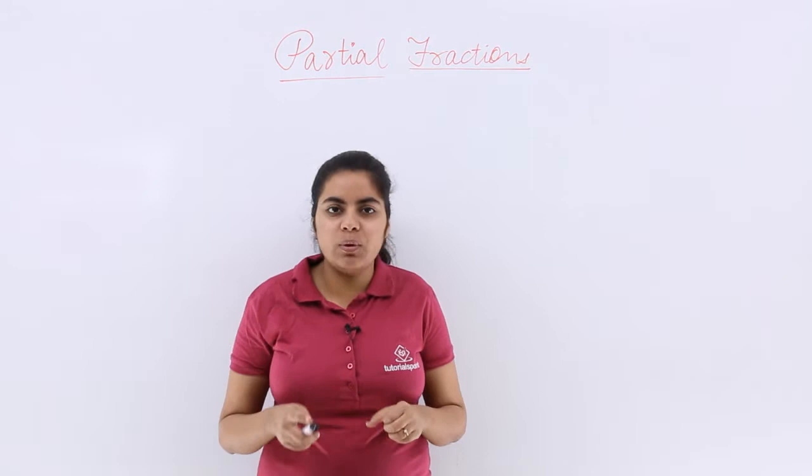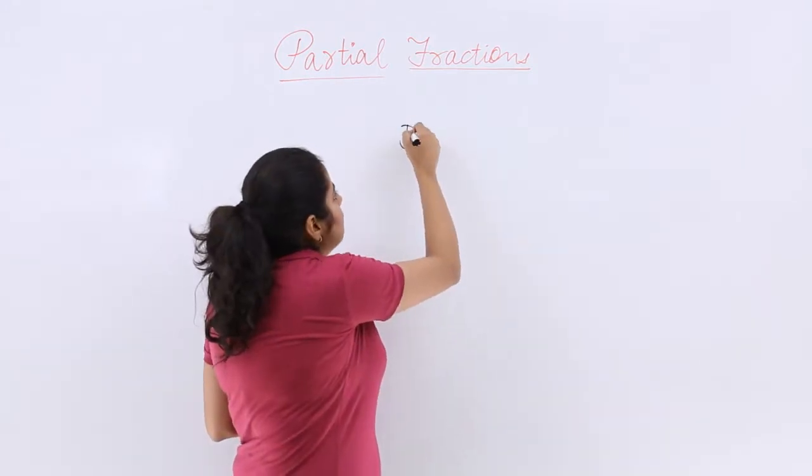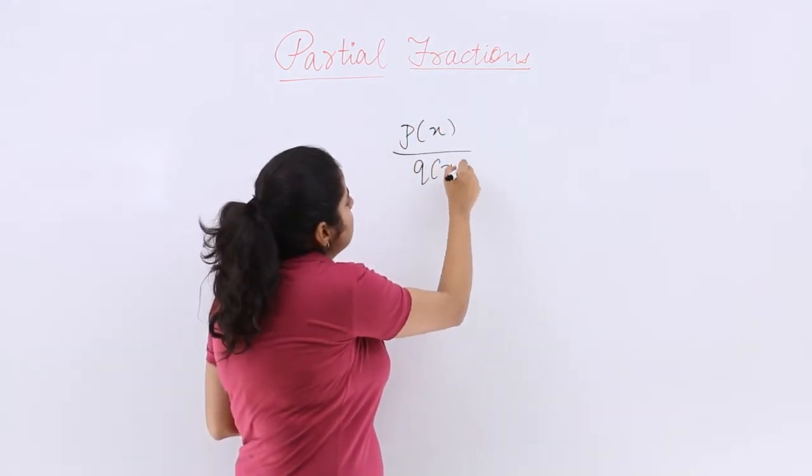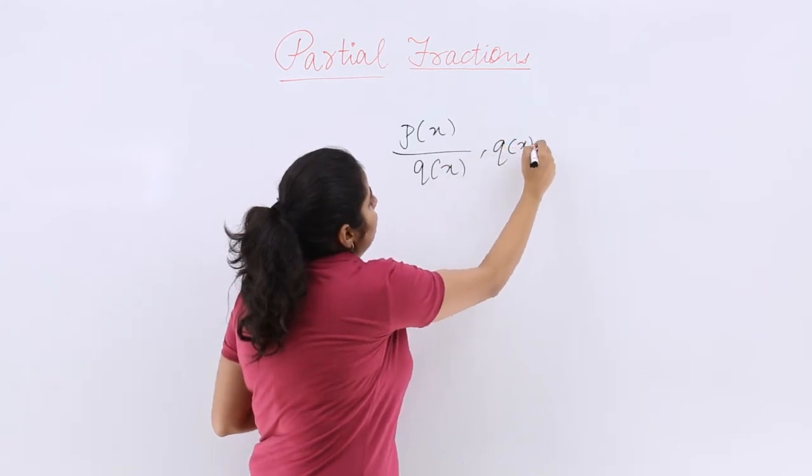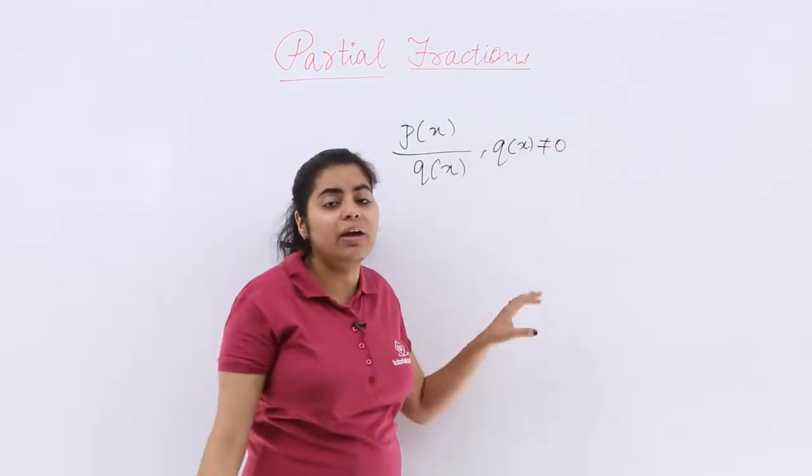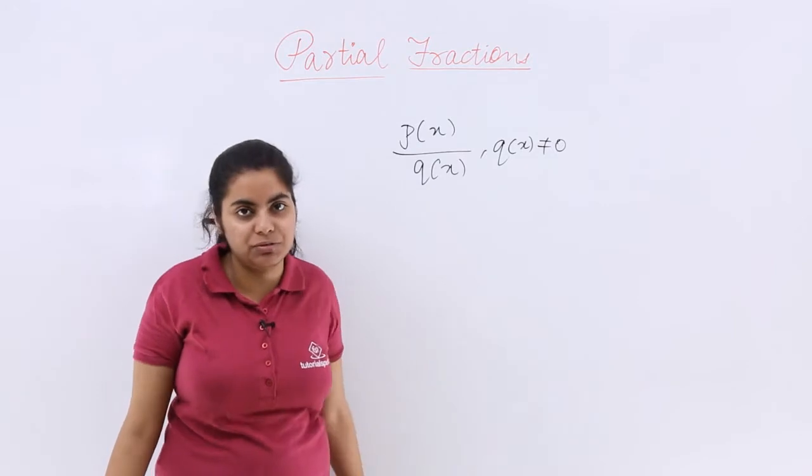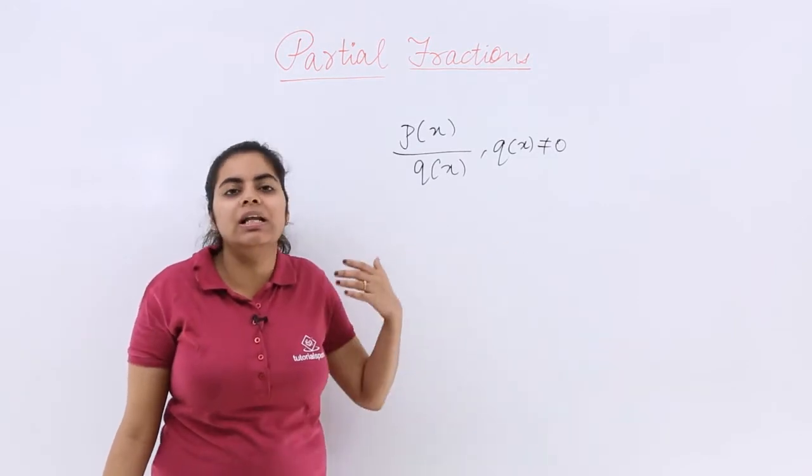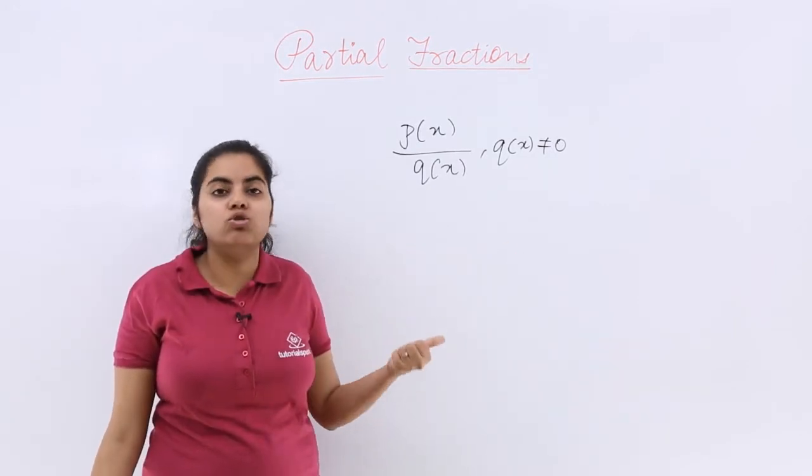Now if you have any given function in the form of p(x) upon q(x) where my q(x) is not equal to 0, I would be saying this is a rational function. And if you have a rational algebraic function, how to integrate it?